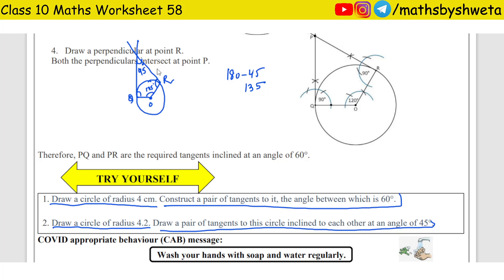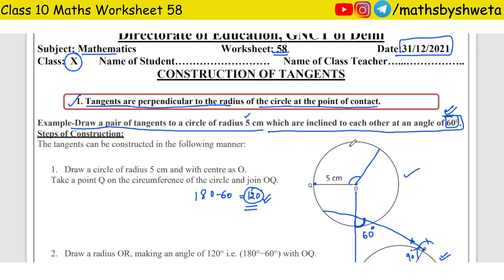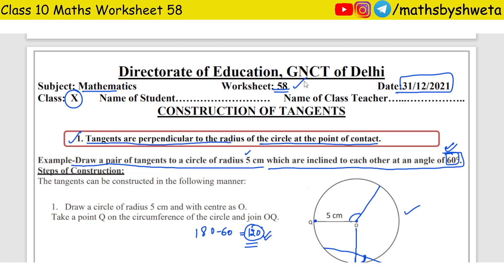There are three questions — the same construction steps, only the radius and angle change. Make it easy: pause and do it one step at a time carefully. Every angle will come from a compass. If you have any doubt, please comment. Do the next worksheet in the next video. If you liked this video, please like and subscribe to my channel. Thank you.